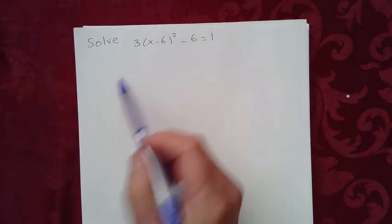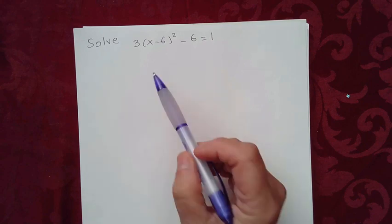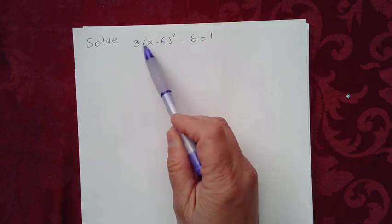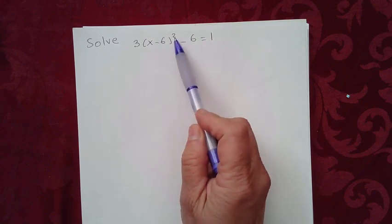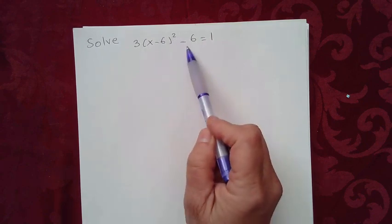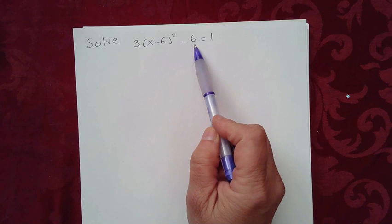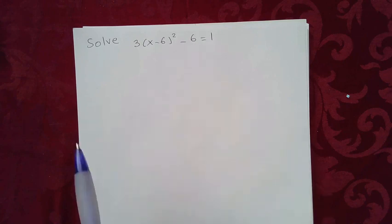Hello, everybody. Today we're going to solve this equation: 3 times (x minus 6) raised to the second power minus 6 equals 1.